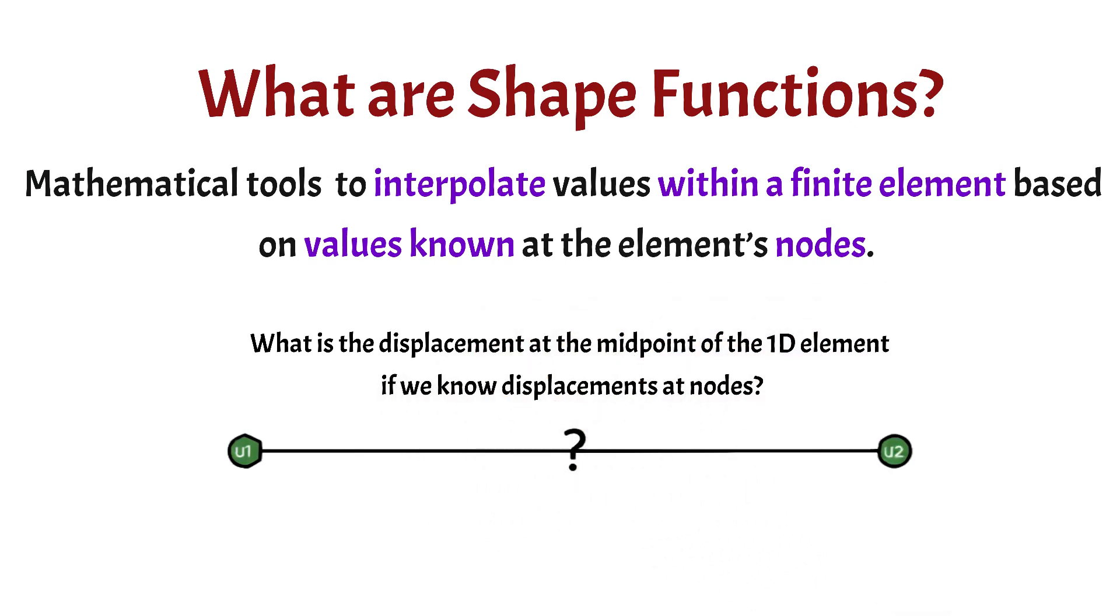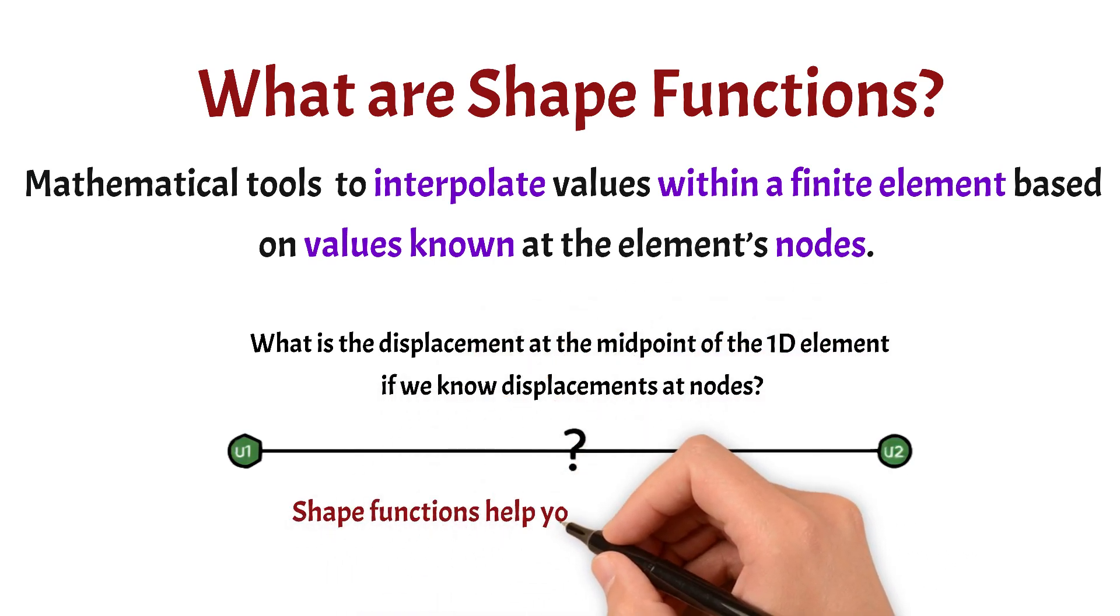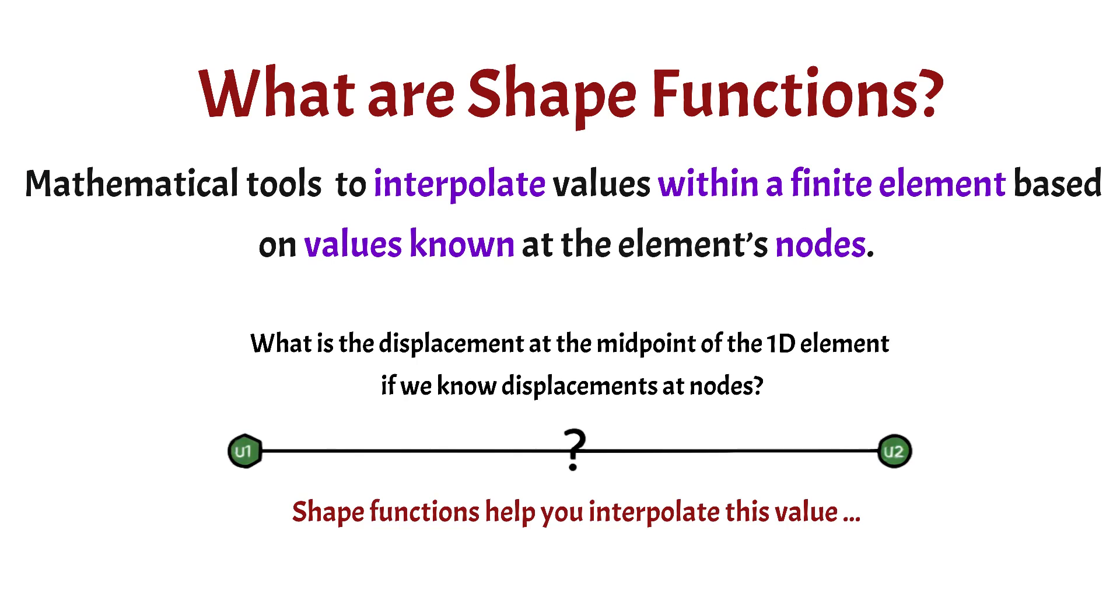Let's say you know the displacements at the two ends of this 1D element u1 and u2, but what about the displacement right in the middle? This is where shape functions come in. They help us estimate or interpolate that unknown value between the nodes.